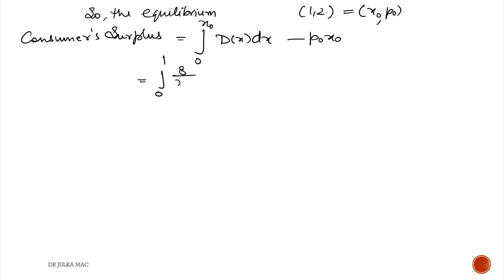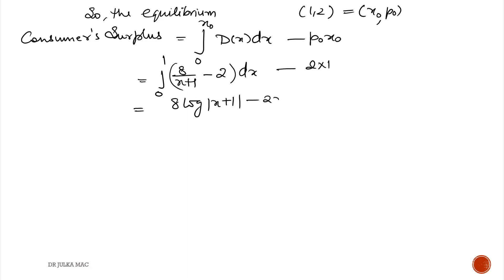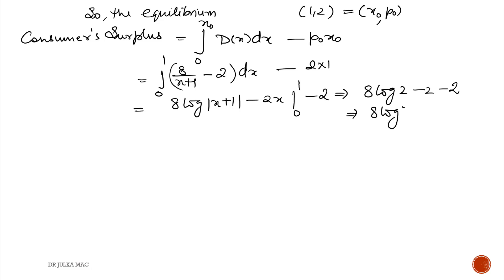So consumer surplus = integration from 0 to 1 of the demand function dx minus 2×1. The integral of 8/(x+1) is 8·log|x+1| and the integral of −2 is −2x, evaluated from 0 to 1, minus 2. After putting in the upper and lower limits, we get consumer surplus = 8·log 2 − 4.